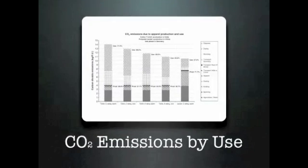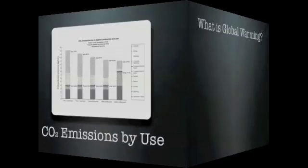This graph compares CO2 emissions for a t-shirt in four different scenarios and for a polyester jacket. In all scenarios, the garments tumble dry. You can see from the size of the cross-checkered parts the large impact tumble drying has.